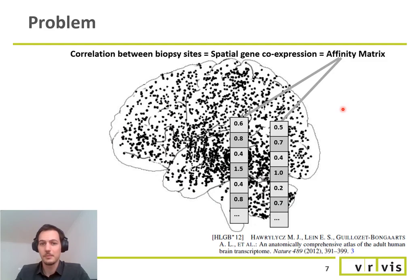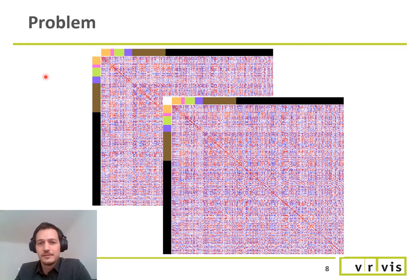We also know which brain regions the biopsy sites belong. Here we selected five that were relevant to our domain experts: the prefrontal cortex, the amygdala areas, the hippocampus, the striatum and the thalamus.